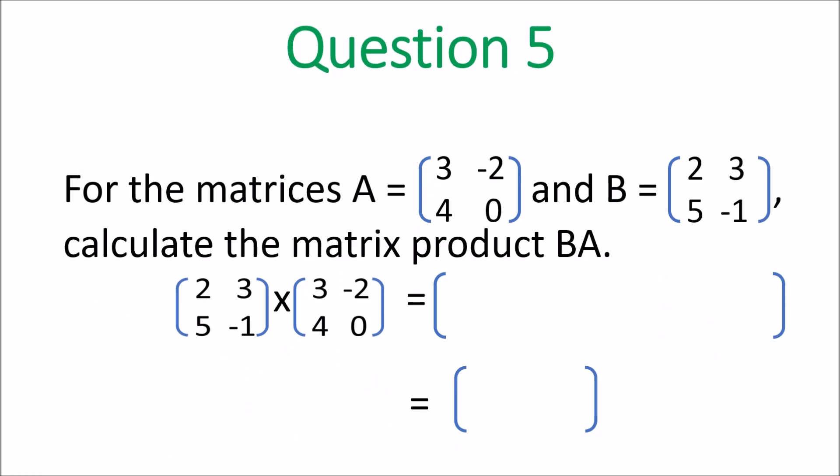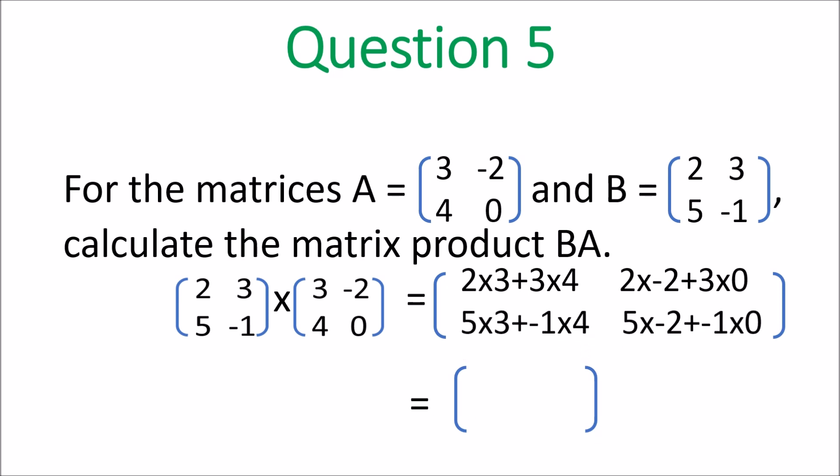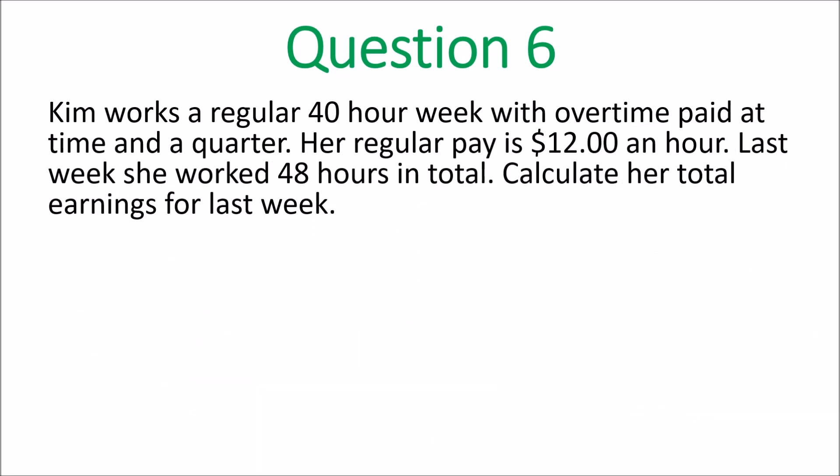Question 5, for the matrices: the first matrix is [3, −2; 4, 0] and B is [2; 3]. First, write them in order — put B to the front times A to the back. Multiply row by column: 2×3 + 3×4, then 2×(−2) + 3×0 on the top; 5×3 + (−1)×4, and 5×(−2) + (−1)×0 on the bottom. Final answer: [18, −4; 11, −10]. Remember, you multiply the row by the column.